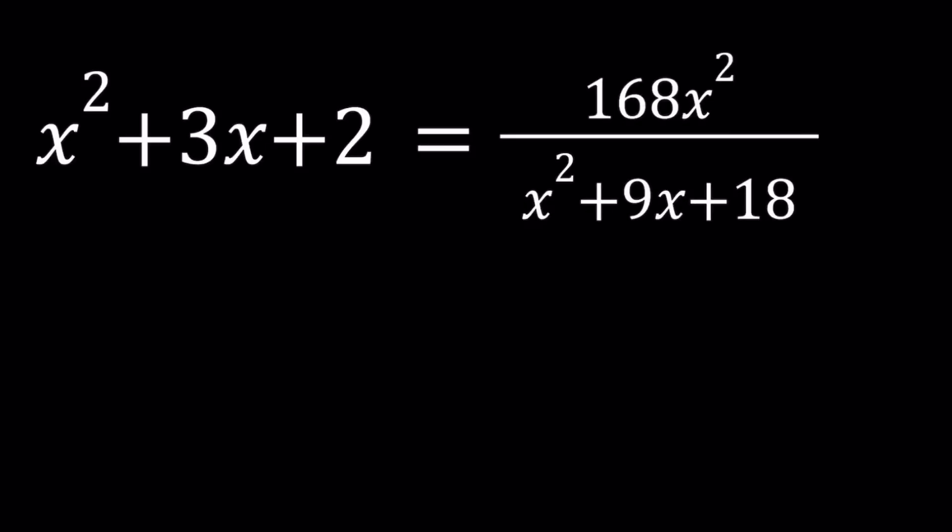Hello everyone. In this video we're going to be solving an interesting rational equation. We have x squared plus 3x plus 2 equals 168x squared divided by x squared plus 9x plus 18, and we're going to be solving for x values. First of all, I want you to notice that both x squared plus 3x plus 2 and x squared plus 9x plus 18 can be factored.